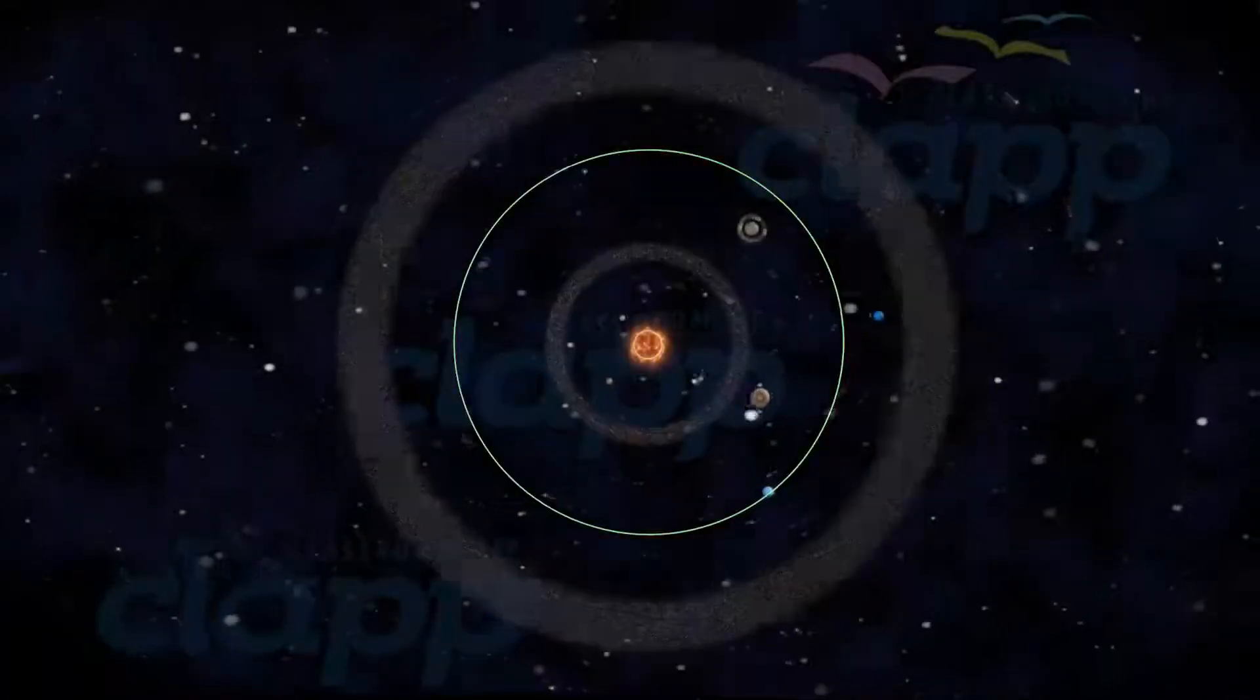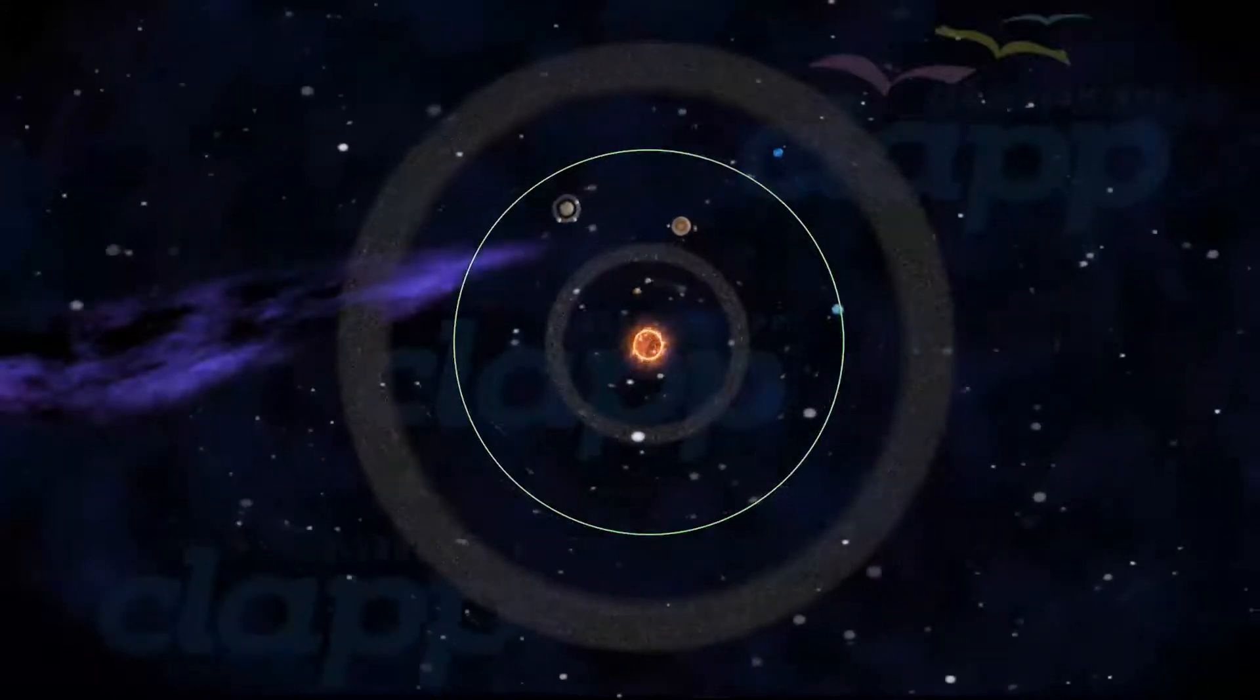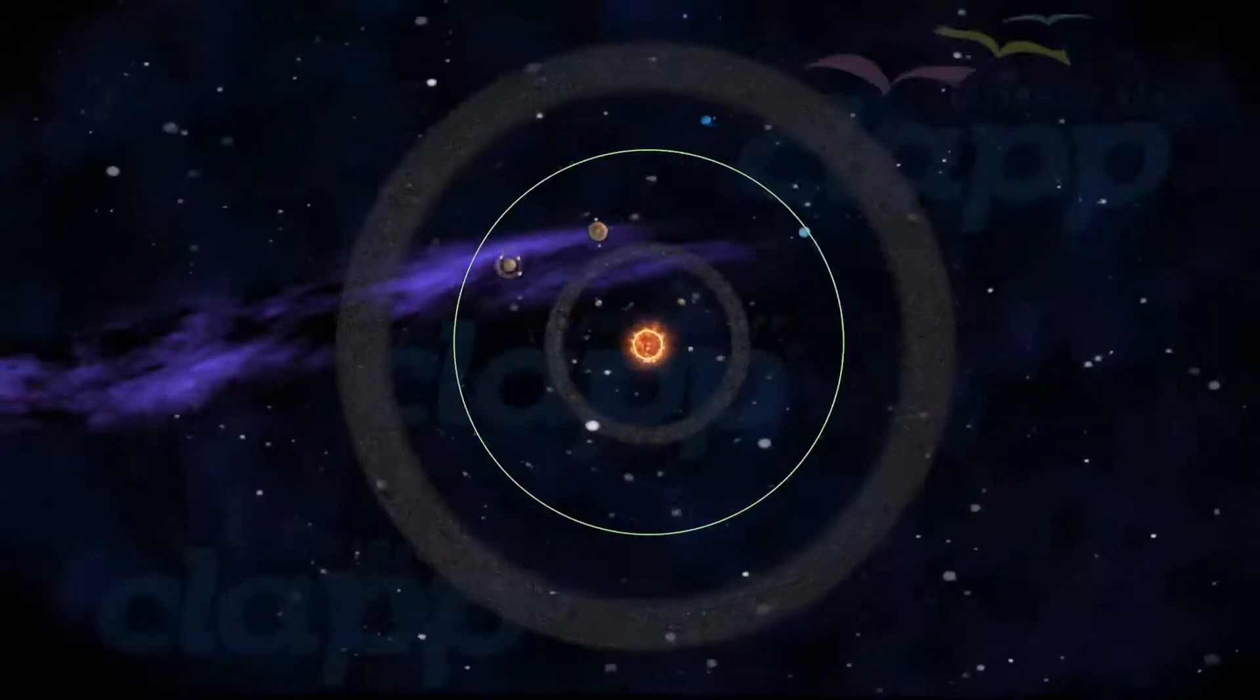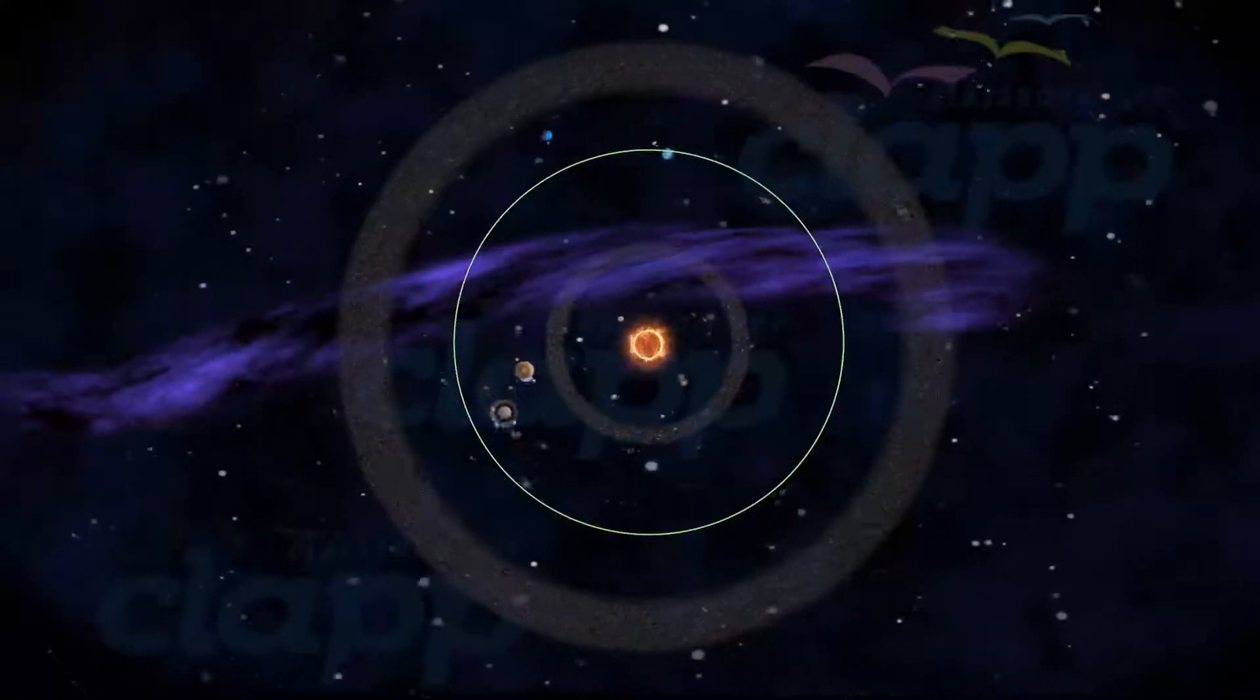Since Uranus travels in an elliptical orbit around the Sun, its distance from the Sun varies from 2.5 billion kilometers to 3 billion kilometers.